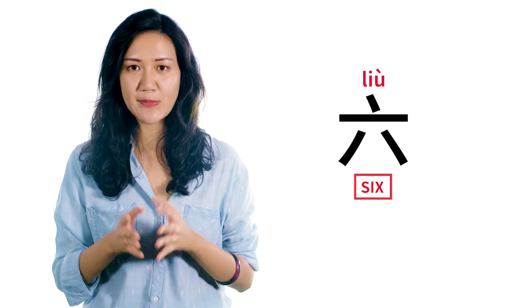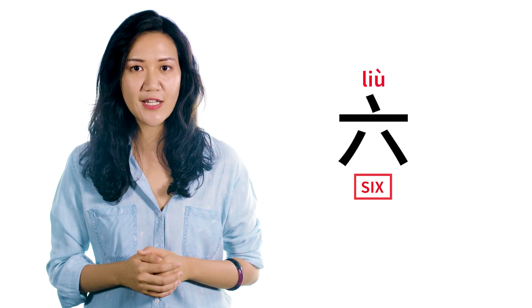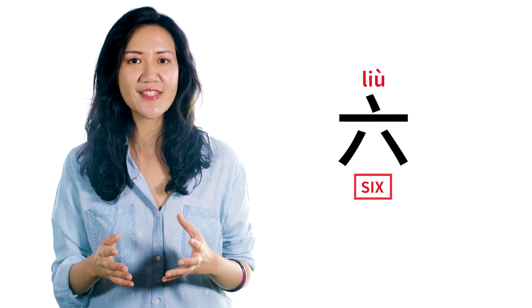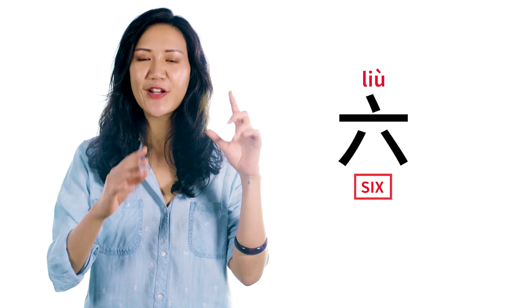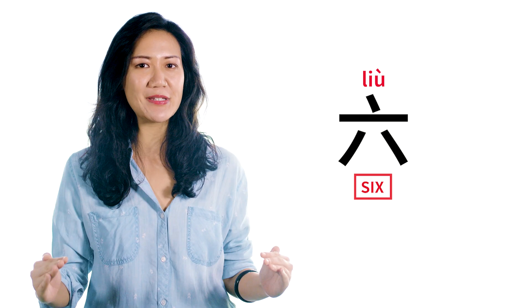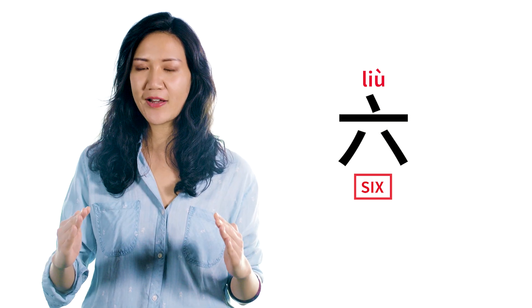The third character is 六. 六 is borrowed from the meaning for house — I can see that. It does kind of look like a teepee with two legs on the bottom.